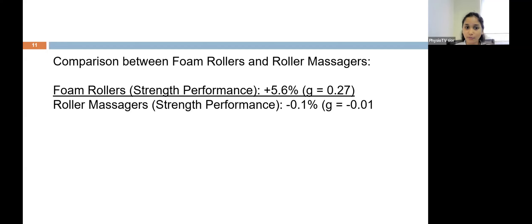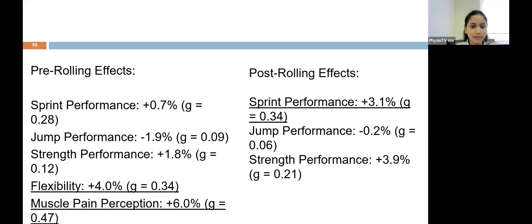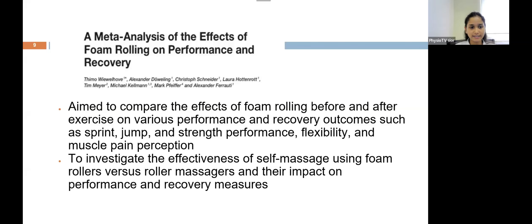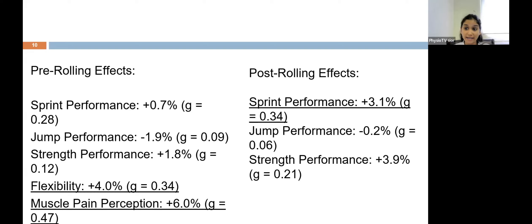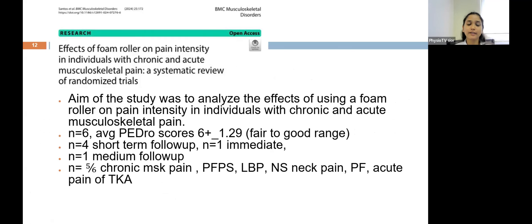For jump performance and strength performance, the effect sizes were not sufficient to draw conclusions. In comparing foam rollers versus roller massagers, foam rollers showed better effect size for strength performance than the hand-administered roller massager. In summary, the 2019 meta-analysis found that pre-rolling worked better for flexibility and muscle pain perception, while post-rolling helped in better recovery with enhanced sprint performance when looking at effect sizes.